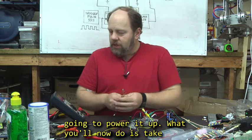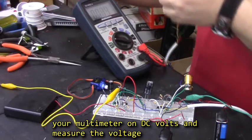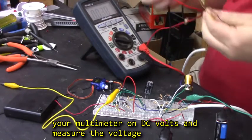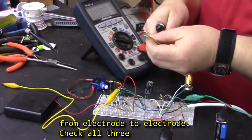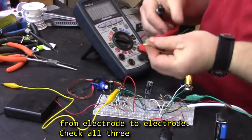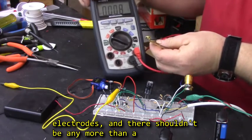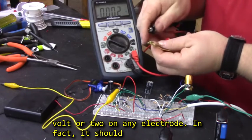What you'll now do is take your multimeter, put it on DC volts and measure the voltage from electrode to electrode. Check all 3 electrodes, there shouldn't be any more than a volt or 2 on any electrode.